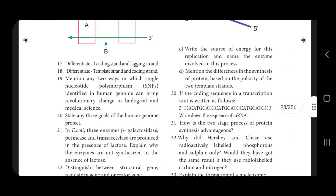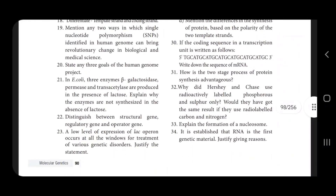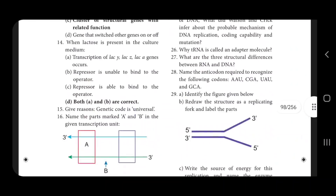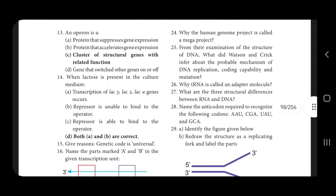So 2 mark — one thing. State 3 goals, 3 mark. From the book: e-goalie, structural gene, regulator gene, operator gene — structural differences, 3 mark. And the human genome project mega project.